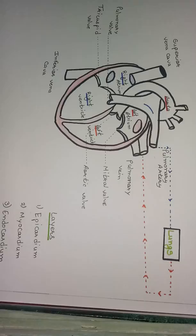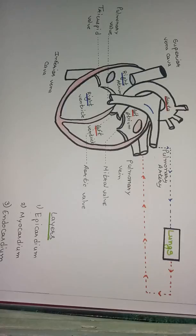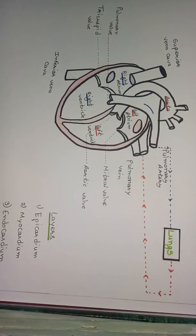Hi, it's me Shubham Salunke, you are watching Pharma Education. Today I will tell you about the anatomy and physiology of the human heart. First, let's start with the anatomy. The human heart is a muscular organ which pumps oxygenated blood to every tissue and collects the deoxygenated blood from them. The human heart is located between the two lungs under the thoracic cavity. The human heart size is equal to our hand fist.